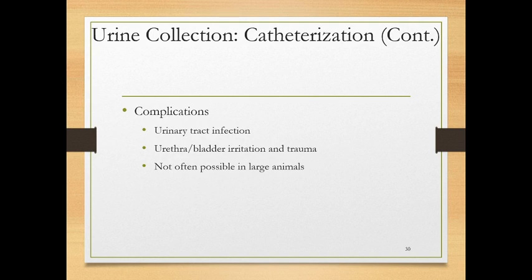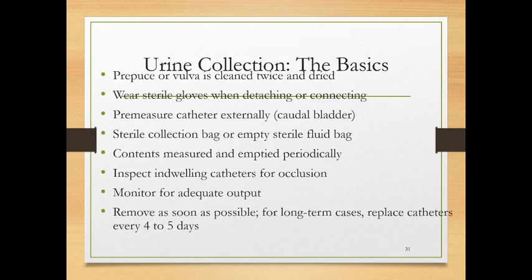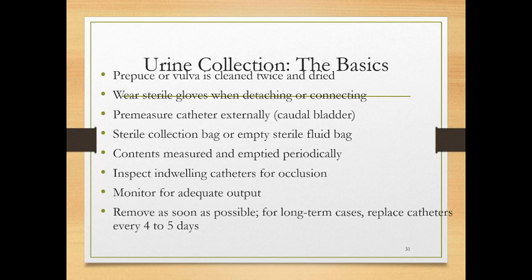Don't advance the catheter too far — it can tie itself in a knot inside the bladder. If quantifying fluids, collect in a sterile collection bag or empty sterile fluid bag. Measure the contents, look at them, and empty them periodically. Always inspect indwelling catheters for occlusion and monitor for adequate output. Remove catheters as soon as possible. For long-term indwelling catheters, replace every 4–5 days, connect to a reservoir bag, suture the catheter to the animal, and inspect for obstructions or kinks.